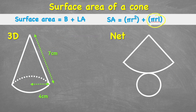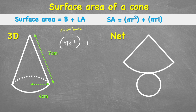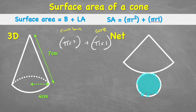I apologize about the wiggly line in this part of the formula — that's not meant to be there. So let's put this into practice with this example. Let's start by putting out the formula: pi r squared — remembering that this is for the circle base — and that gets added to pi r L, which is our cone.